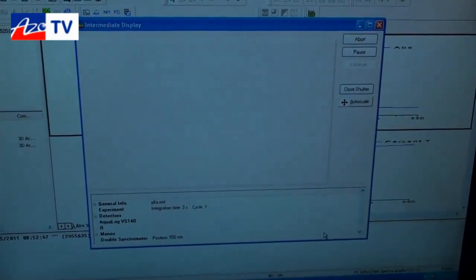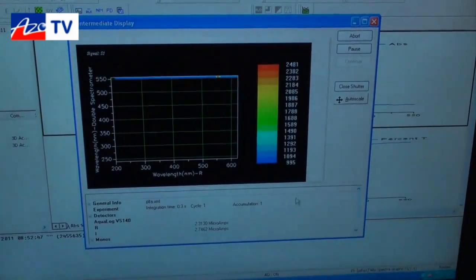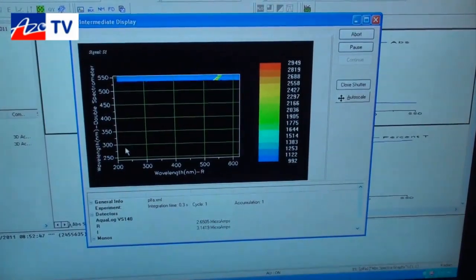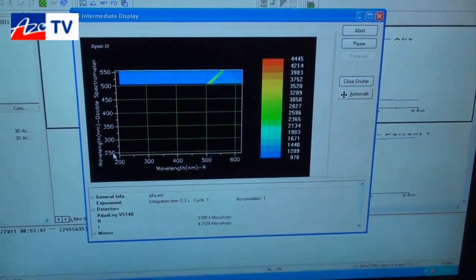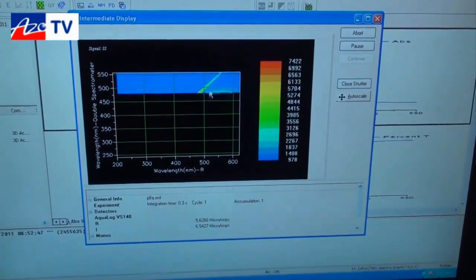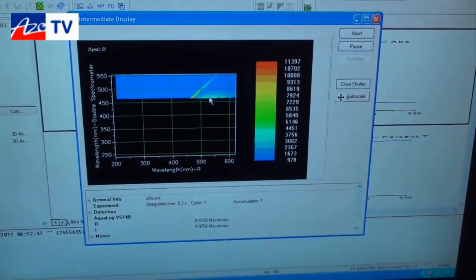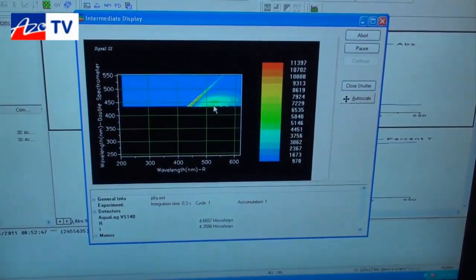So this is a picture of the data as it's being collected. So you'll notice we're scanning the excitation axis in reverse, again to minimize photo bleaching. And on this side we have the emission axis, which allows us to visualize the fluorescent compounds that are in the standard sample.